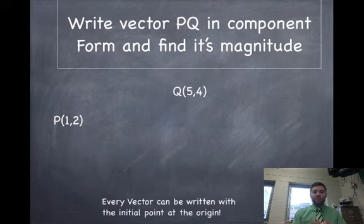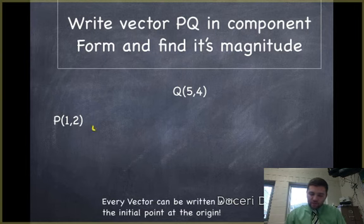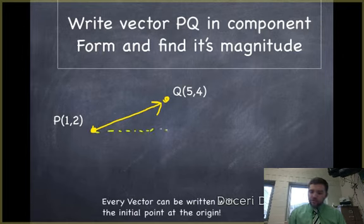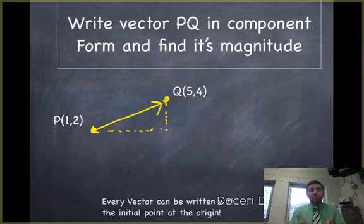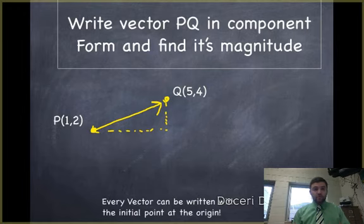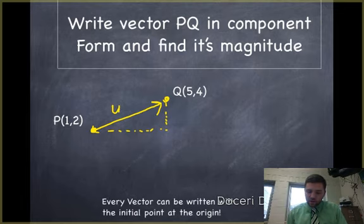Write vector PQ in component form and find its magnitude. Suppose we had a vector that went from point P up to point Q in this direction, and I wanted to write it in component form. Remember, if we're thinking about the earthquake, it's going to be shifted horizontally and shifted vertically — in other words, it's got two components: the horizontal component, what does it move from left to right, and the vertical component, what does it move up and down. I want to figure out those components, and then we can write this vector in component form. Let's call this vector U.